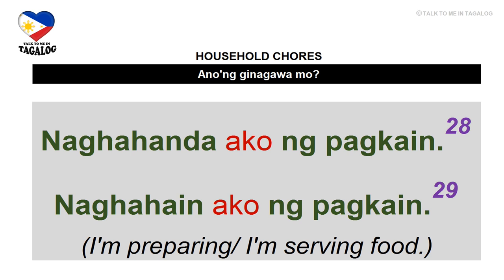Naghahanda ako ng pagkain. Naghahanda means preparing and pagkain is food. Naghahanda ako ng pagkain — I'm preparing food. But if you're going to serve the food, the right sentence to say is Naghahain ako ng pagkain — I'm serving food.